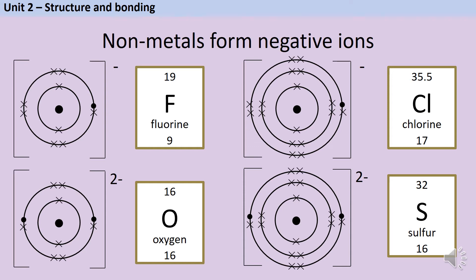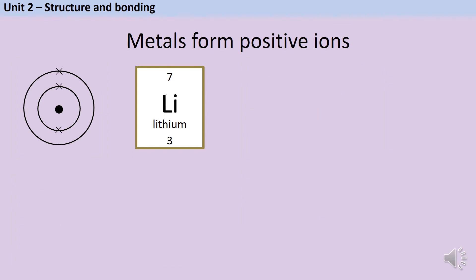This is how all non-metals form ions: they gain electrons and therefore become negatively charged. Metals are on the opposite side of the periodic table, so they make ions in the opposite way — they lose electrons rather than gaining them.